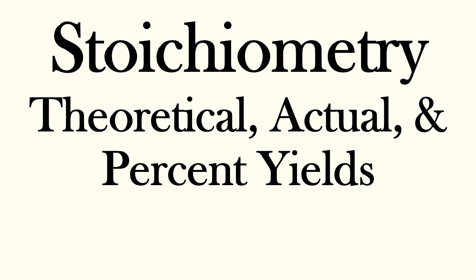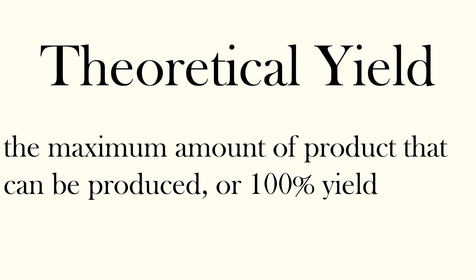This is theoretical, actual, and percent yields. The theoretical yield is the maximum amount of product that can be produced, or 100% yield, and that's the key term here, 100% yield.